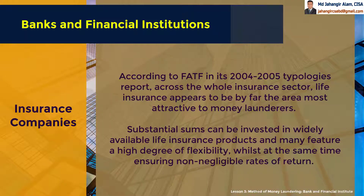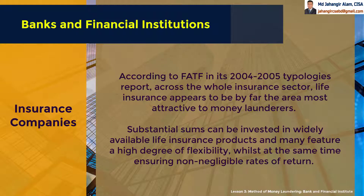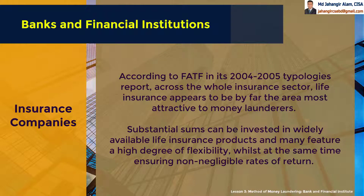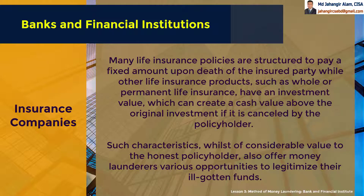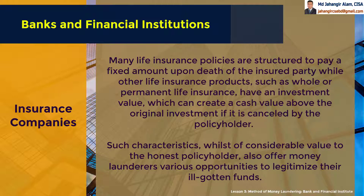Insurance Companies. According to the FATF in its 2004-2005 Typologies report, across the whole insurance sector, life insurance appears to be by far the most attractive area to money launderers. Substantial sums can be invested in widely available life insurance products, many featuring a high degree of flexibility whilst at the same time insuring non-negligible rates of return. Many life insurance policies pay a fixed amount upon death of the insured party, while other products such as whole or permanent life insurance have an investment value which can create a cash value above the original investment if cancelled by the policyholder. Such characteristics offer money launderers various opportunities to legitimize their ill-gotten funds.